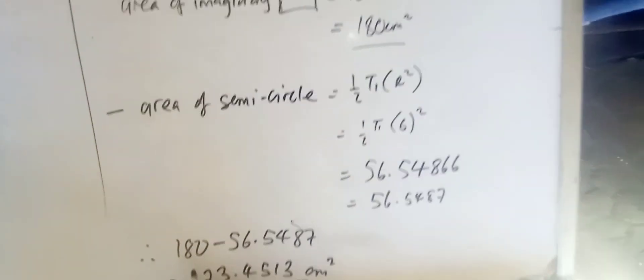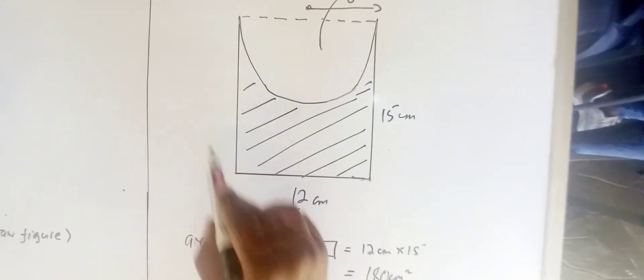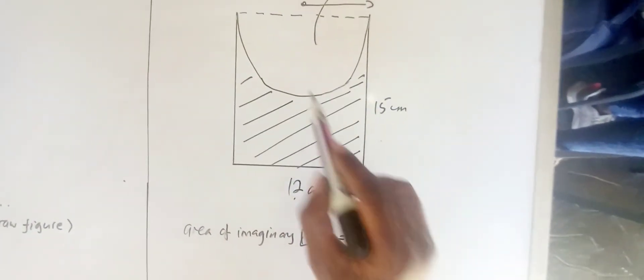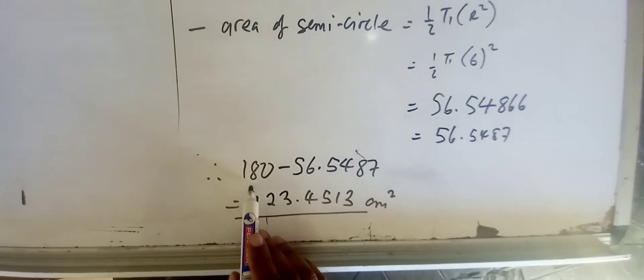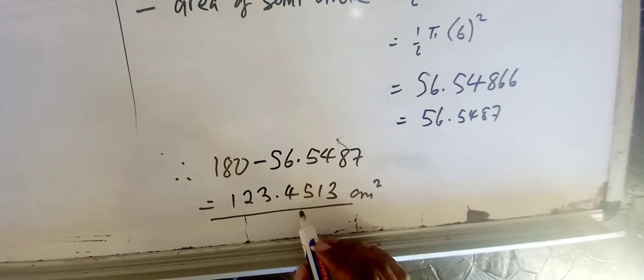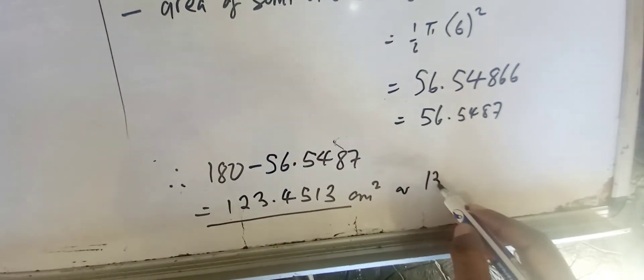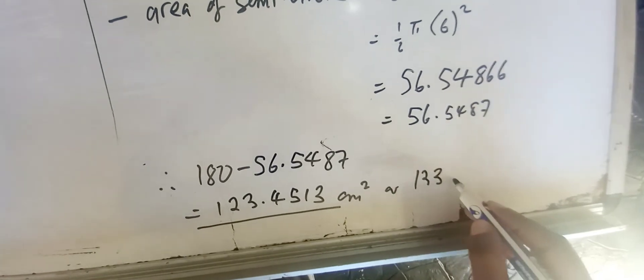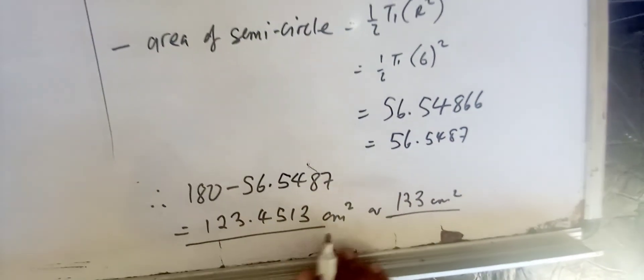And now, to get the area of the shaded part, we are going to say area of this imaginary rectangle minus area of semicircle. As a result, we have 180 minus this area, which will give us an area of 123.415 or 123 square centimeters if you write it to three significant figures.